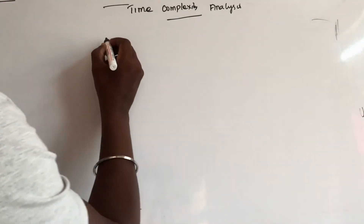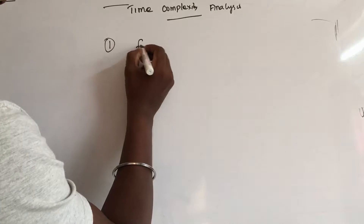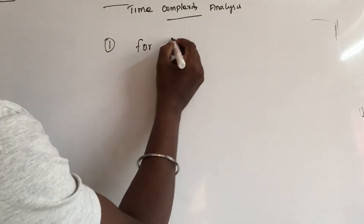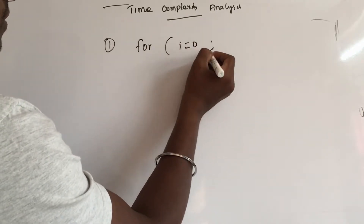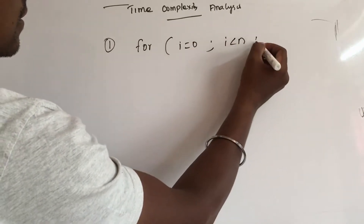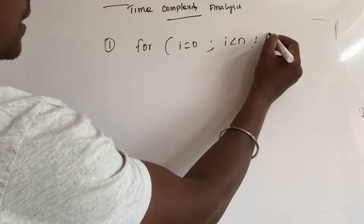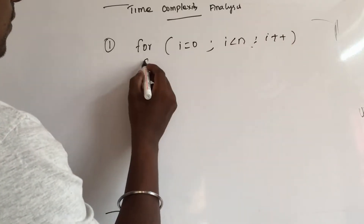For the first example, we look at a for loop: i is equal to 0, i less than n, i plus plus. This is one statement.